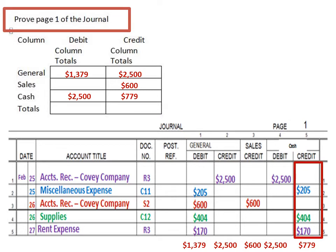The big thing you want to do here — and kind of half the reason why we prove journals — is to make sure that we did everything correctly. We want to find out: do our debits equal our credits? So in the upper left-hand corner, we're going to add our debit column totals together and we get a total of $3,879. Now we want to add our credit column totals and see if we get that same number.